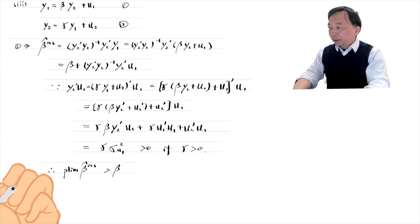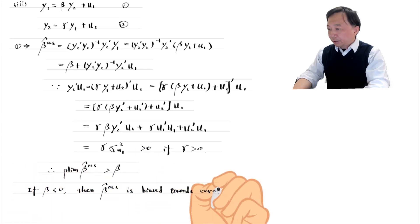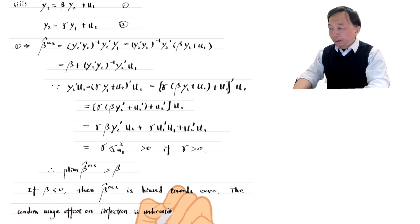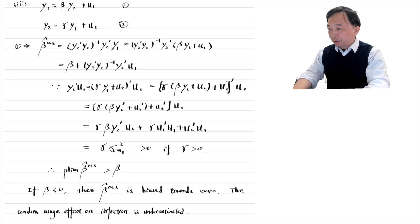In our case, beta one is negative, so the OLS estimate is biased towards zero. The condom usage effect on infection is underestimated.